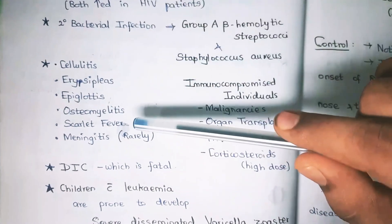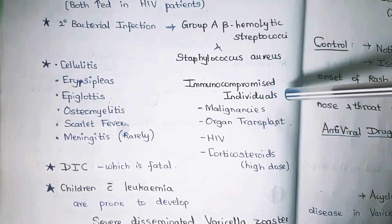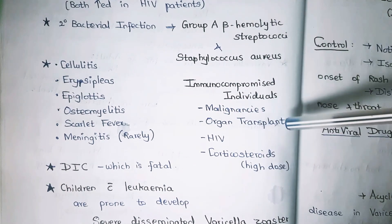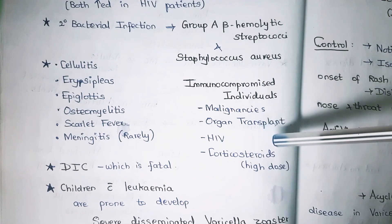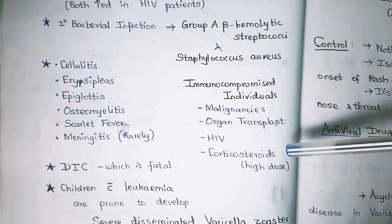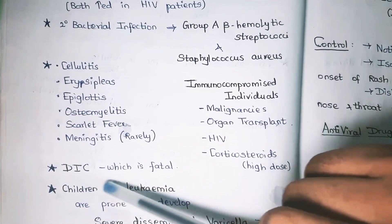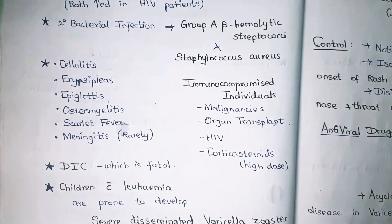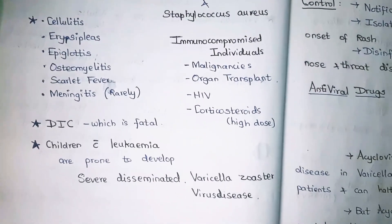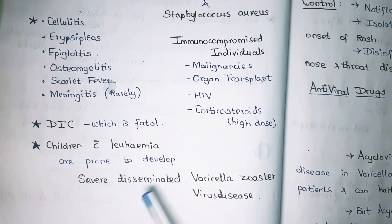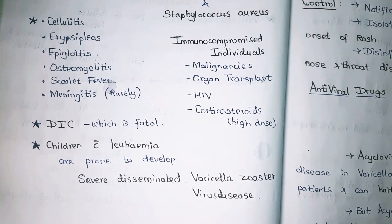Immunocompromised individuals include those with malignancies, organ transplant patients, HIV patients, and those taking high-dose corticosteroids. A rare but fatal complication is disseminated intravascular coagulation (DIC). Children with leukemia are prone to develop severe disseminated varicella disease.